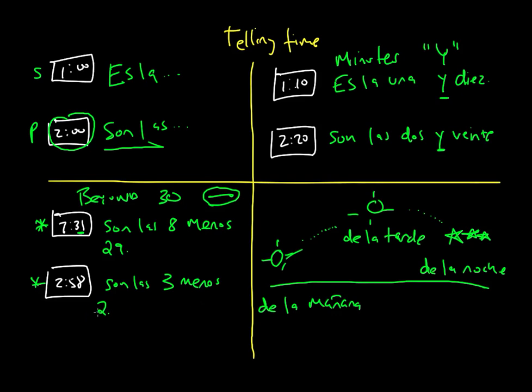Now let's apply some of these specifics over here. So 2:58 in the afternoon, we would say 'son las tres menos dos de la tarde.' Finally, if you want to ask somebody what time is it, you would say 'qué hora es.' Practice this, and if you have any questions let me know. Hasta luego.